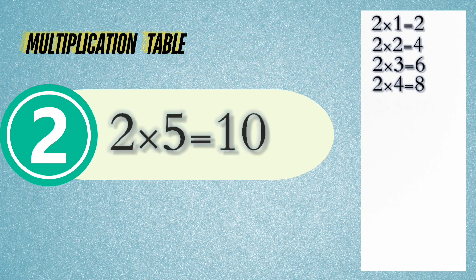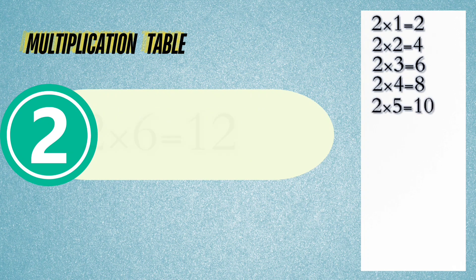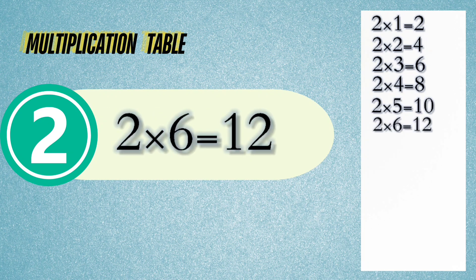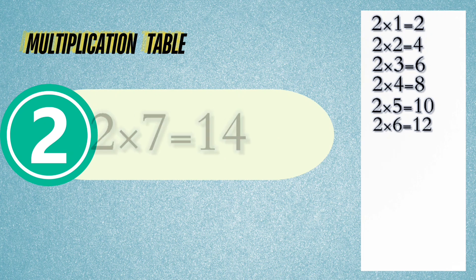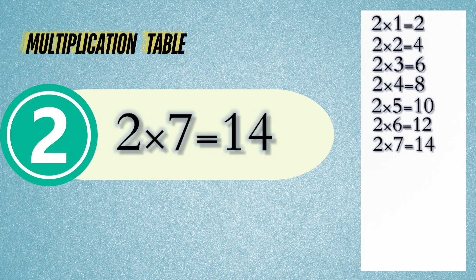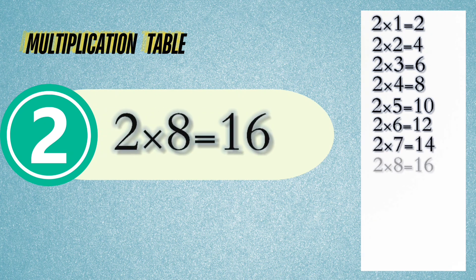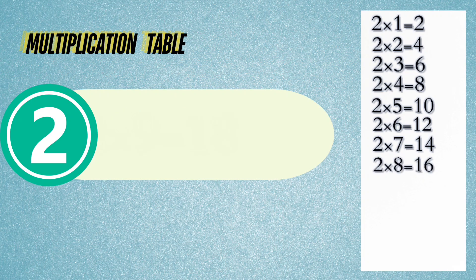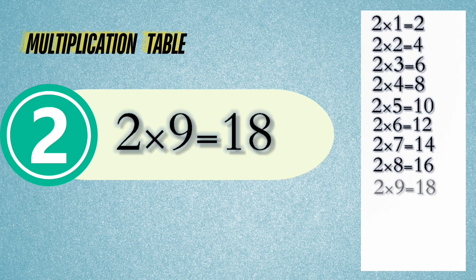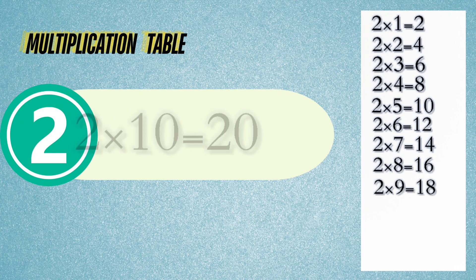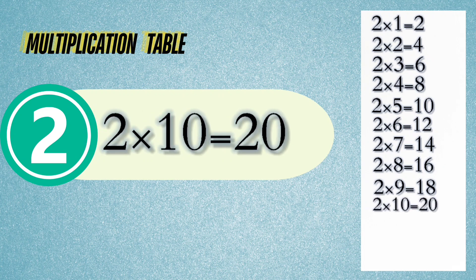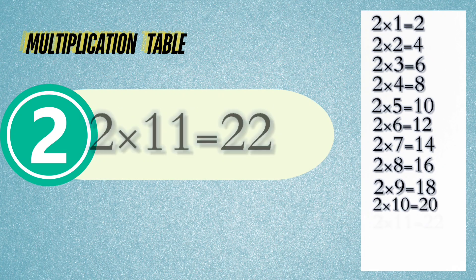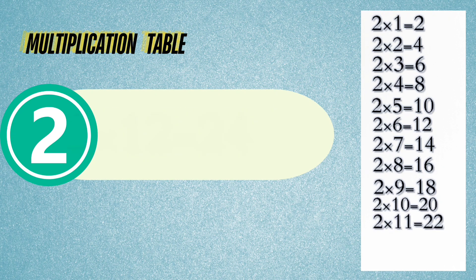Two times five is ten. Two times six is twelve. Two times seven is fourteen. Two times eight is sixteen. 2 times 9 is 18. 2 times 10 is 20. 2 times 11 is 22.